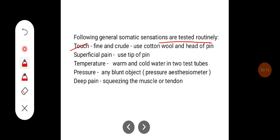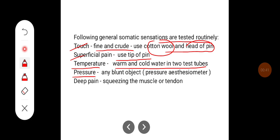Touch — it could be fine or crude touch, for which you use cotton wool and the head of a pin. Cotton wool is used for testing fine touch, and the head of the pin is utilized for testing crude touch sensation. For superficial pain, you use the tip of the pin. Temperature can be tested using warm and cold water in two test tubes.